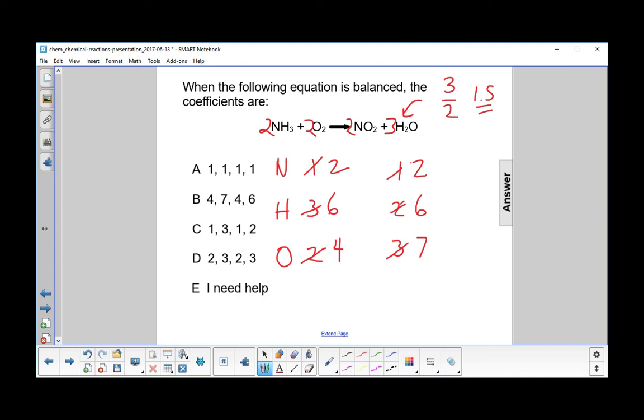We look at the oxygen—we have four but we need seven. So that means we have to multiply the oxygen by seven over four. But to do that, we now multiply everybody by four.